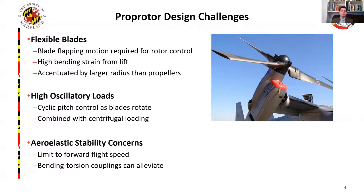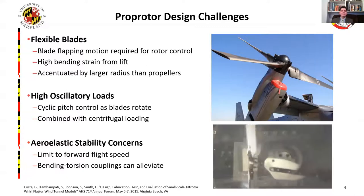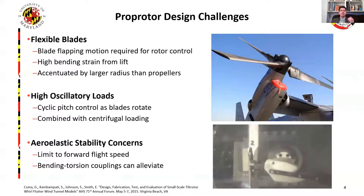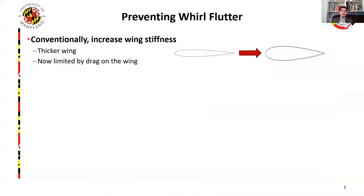The most notable is Whirl Flutter, which is an explosive instability that occurs due to the coupling of the rotor aerodynamic forcing with the elastic wing modes. This is a key limitation to the forward flight speed. As you increase your forward flight speed, the damping of these wing modes decreases until it goes negative — an unstable situation. Conventionally, the solution was to make the wings stiffer, leading to a thicker airfoil and therefore more drag. So you can delay Whirl Flutter to higher speeds, but now you can't reach those speeds due to the drag on the wing.